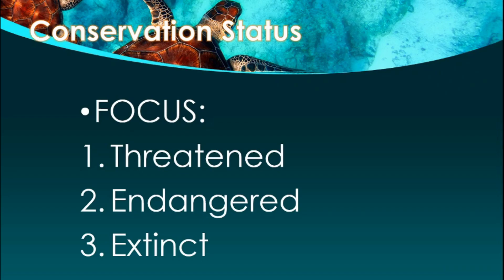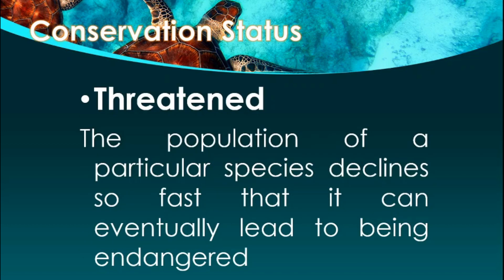For this video, we will only focus on threatened, endangered, and extinct, and we will differentiate these three categories. Let us start with threatened. When you say threatened, the population of a particular species declines so fast that it can eventually lead to being endangered.